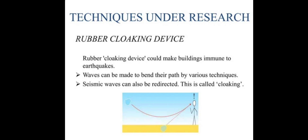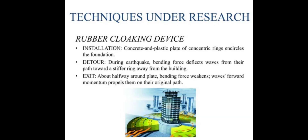Rubber cloaking devices could make buildings immune to earthquakes. Seismic waves can be made to bend as they pass using various techniques, and seismic waves can be redirected — this is called cloaking. Rubber cloaking devices are installed using concrete and plastic plates of concentric rings that encircle the foundation. During an earthquake, bending forces deflect waves from their path towards a stiffer ring, away from the building — this is the detour effect. About halfway around the plate, bending forces weaken the waves, and momentum propels them back on their original path.